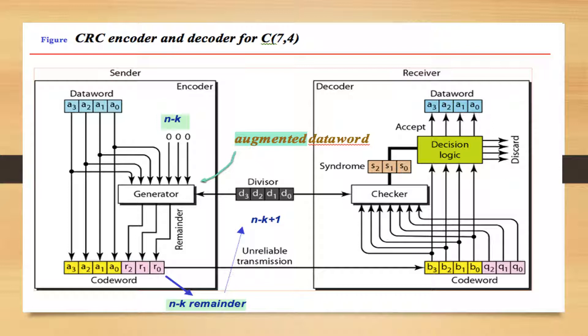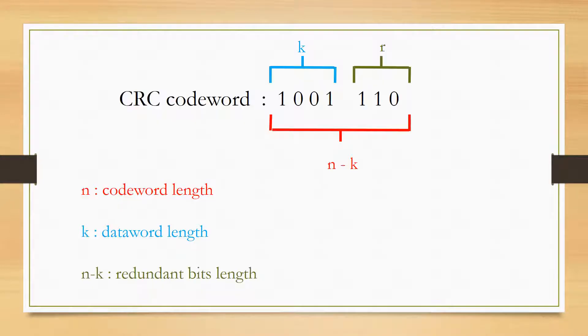What's the meaning of C(7,4)? These are the length of codeword and the length of dataword. We assume N as the length of codeword, K as the length of dataword, and we call the redundant bits N minus K.